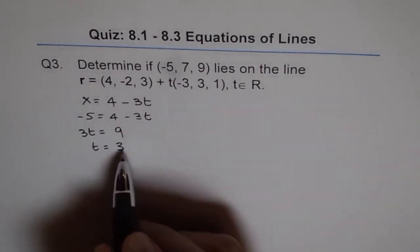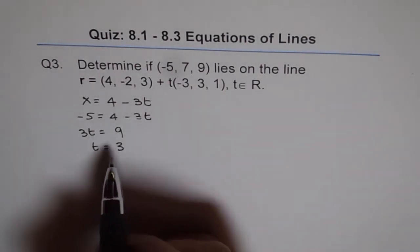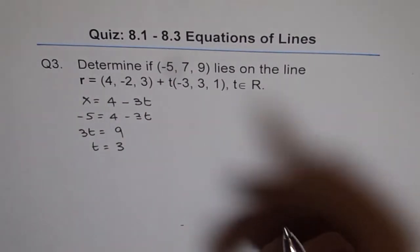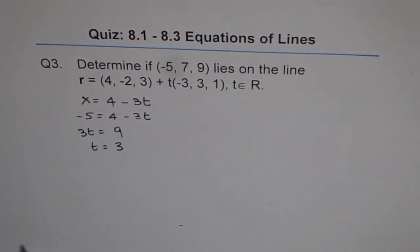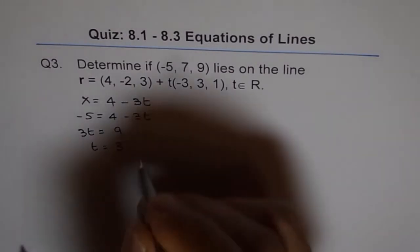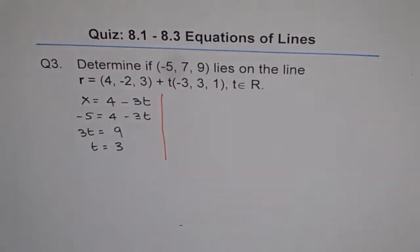So now we get t as 3. If t is 3 then we can find what is r. So that's what we will do and then we will compare whether it works for us or not.